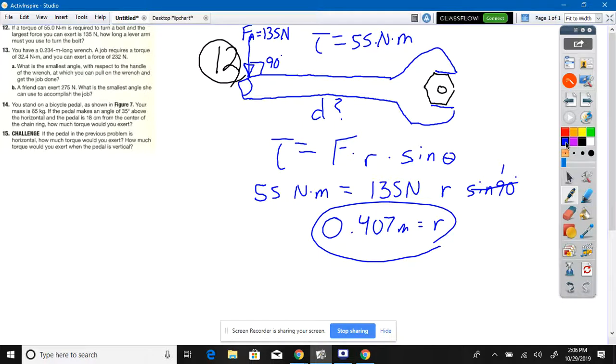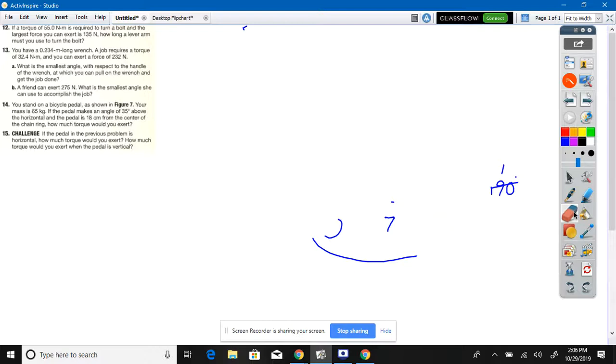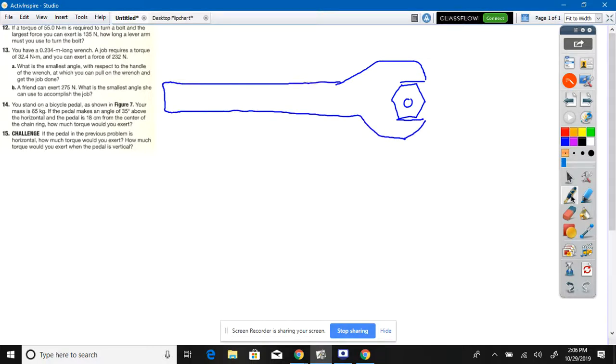Number 13. You have a 0.234 meter long wrench, a job requires a torque of 32.4 Newton meters, and you can exert a 232 Newton force. What's the smallest angle? Draw your wrench again on the bolt. How's that, is that a nice industrial wrench there?